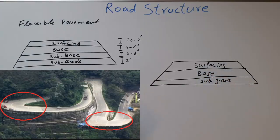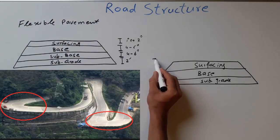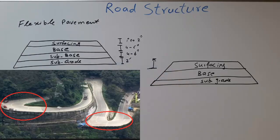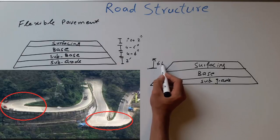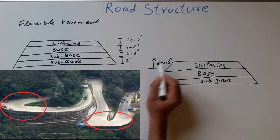The subgrade is similar to flexible pavement and the base is also similar to flexible pavement, but the surfacing is different. The material used in surfacing is concrete. The thickness of surfacing is normally six to twelve inches — that is, half a foot to one foot.